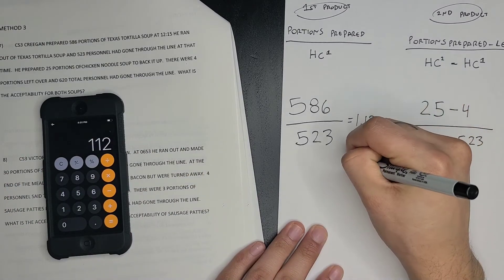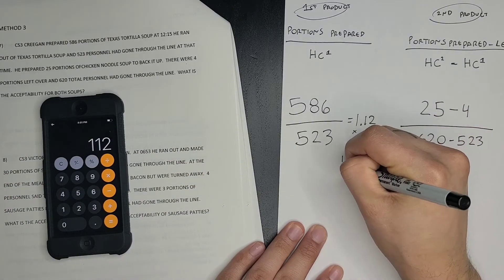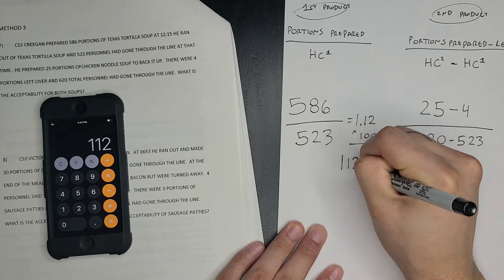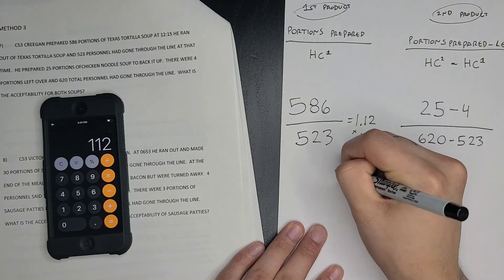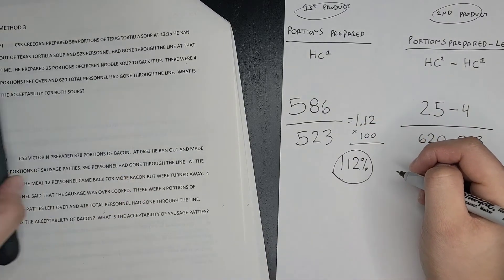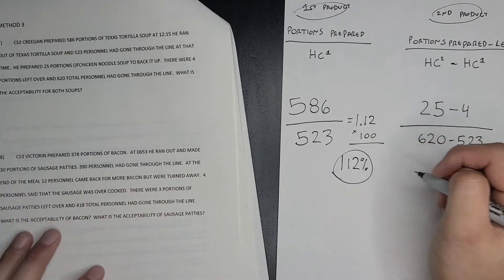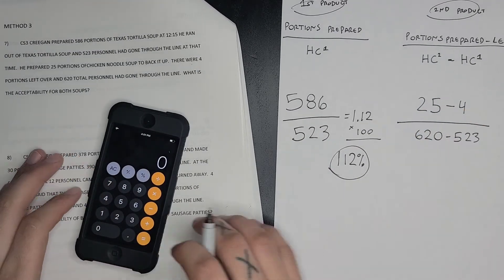Which equals 112 percent. So that's acceptability for the Texas tortilla soup. Now we're going to move on to this second one.